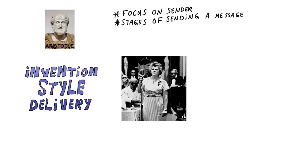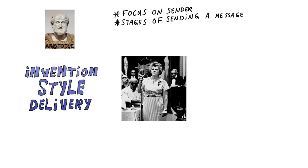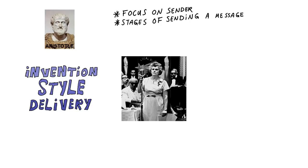A politician might have a topic she wants to talk about. She will then choose her words carefully — what tone should she use? And thirdly, she will choose the manner of delivery. She might choose to publish a pamphlet or give a speech. Let's say she gives a speech. Now comes the stage of delivery — she will use her stage performance, her gestures and intonation to strengthen her message.